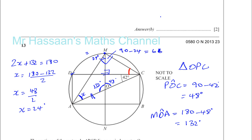This angle is 66 degrees. The angle DCM is found from triangle MPC, where we have the right angle at P. So DCM = 90 minus 66 = 24 degrees. Of course, you could also just see it directly as 24 degrees.